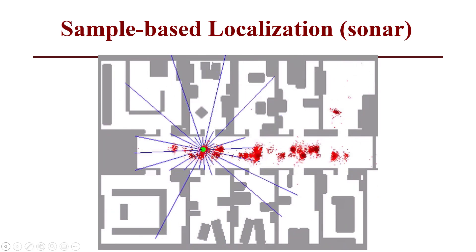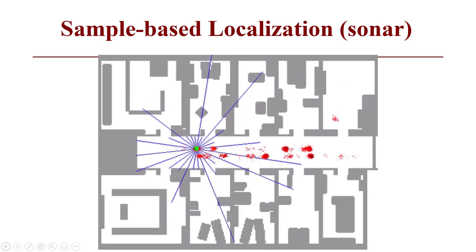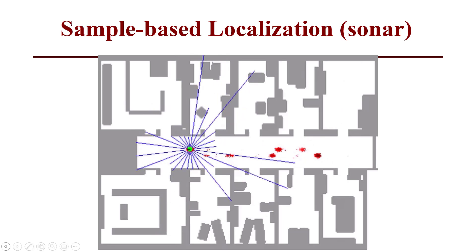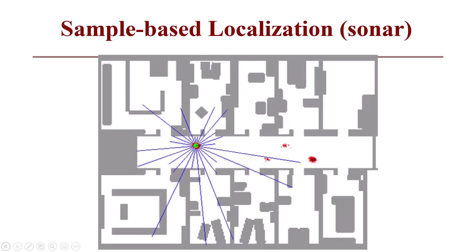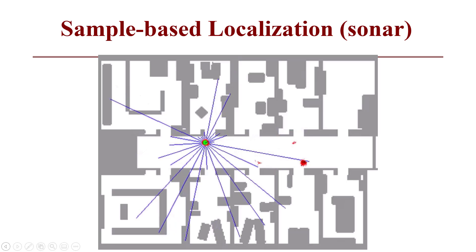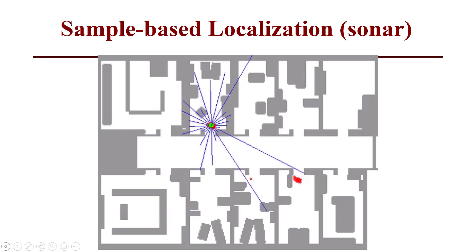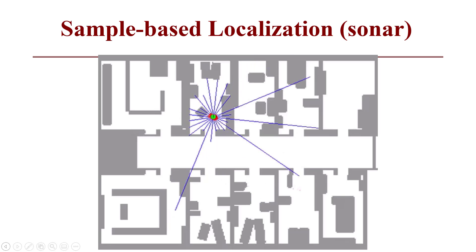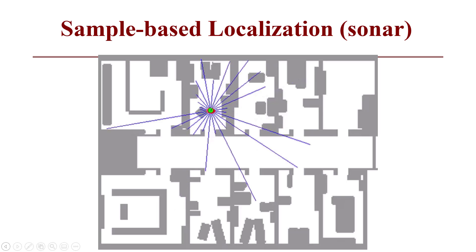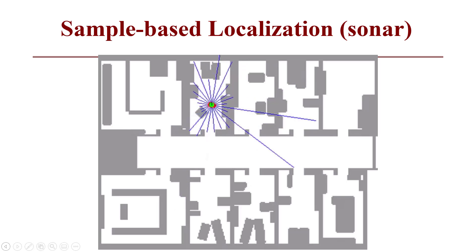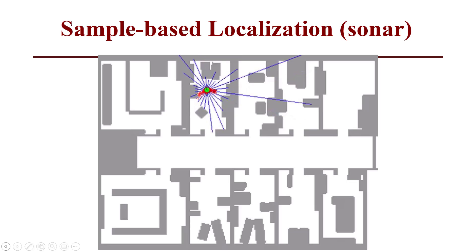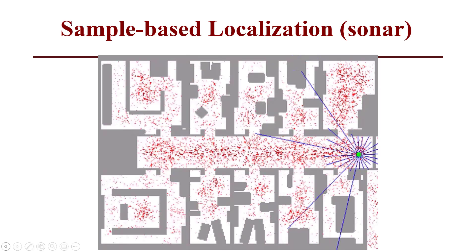As the robot moves through the hallway, there are a few places where it may appear to be in a room, creating two local minima. Once it enters the room, it completely localizes, and the second set of red dots starts to disappear. The sonar data overlay in blue is not completely accurate — there are false positives and false negatives, with some rays appearing to pass through walls, which we know cannot happen.